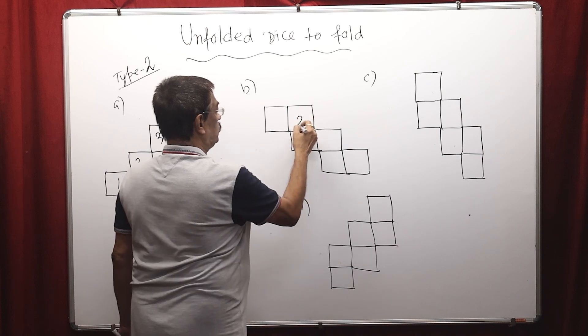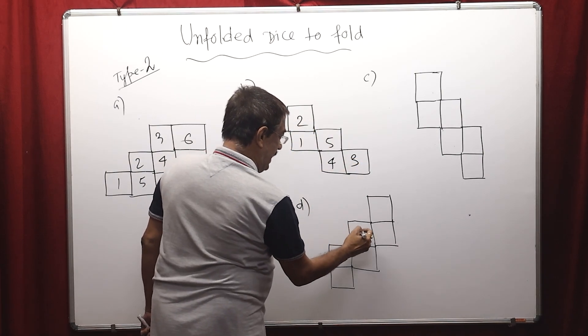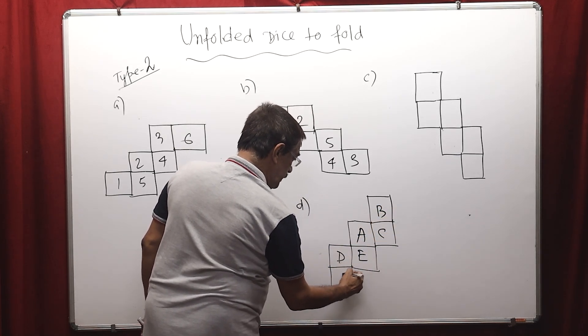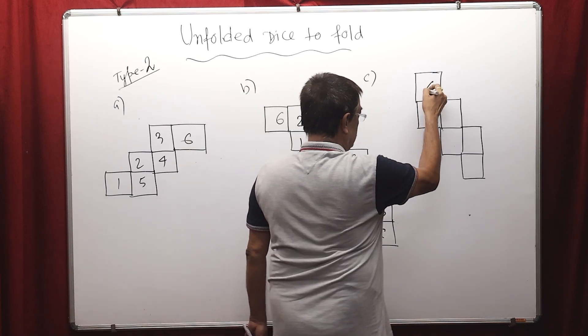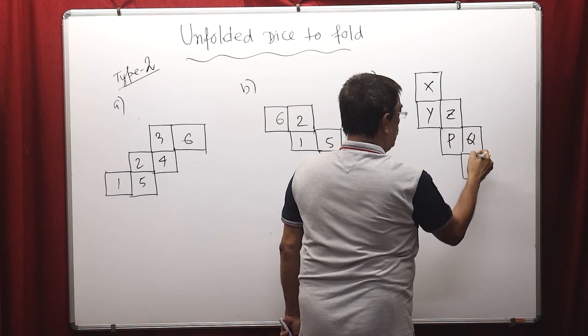Say 1, 2, 3, 4, 5, and 6. Say A, then B, then C, then D, then E, then F, then X, Y, Z, P, Q, R.